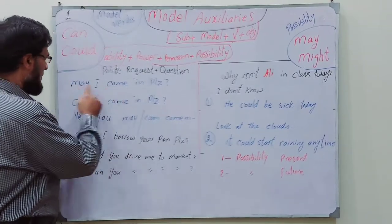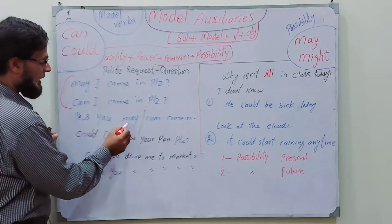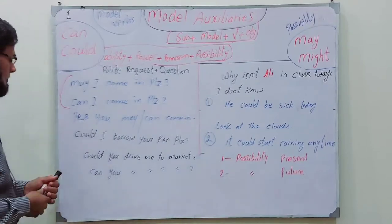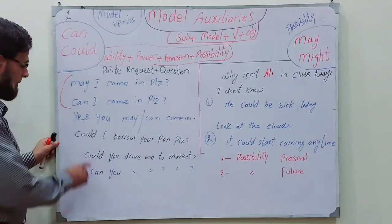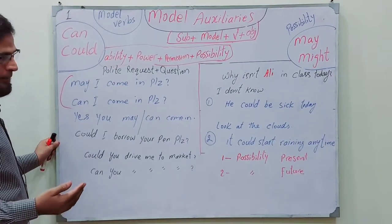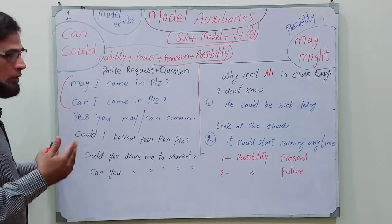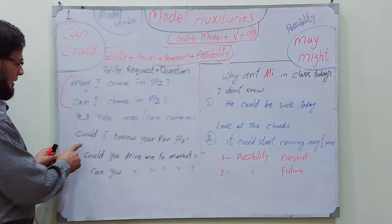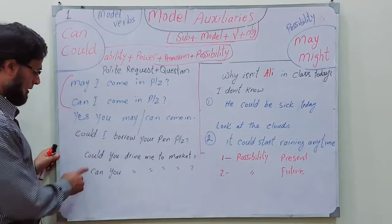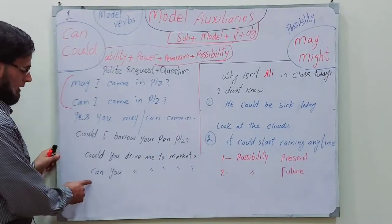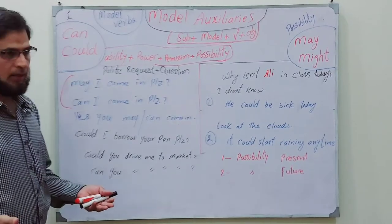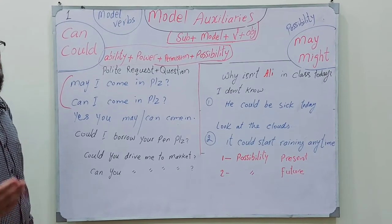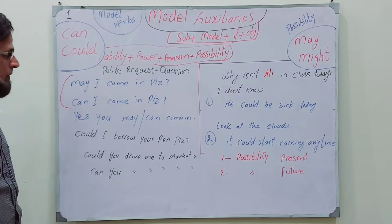The response can be: 'Yes, you may' or 'Yes, you can come.' Another polite request: 'Could I borrow your pen please?' — this is a polite request. You can also use 'could you' or even 'would' (which will be covered in the next lecture). Examples: 'Could you help me please?', 'Could you drive me to market please?', or 'Can you?' — meaning could or can. For permission, may, can, and could — all three can be used.